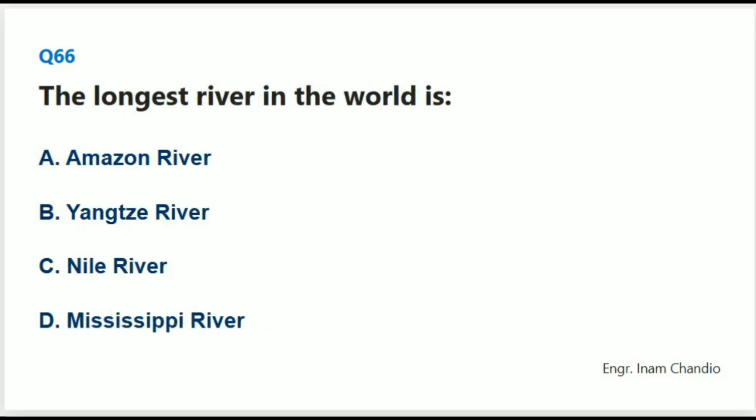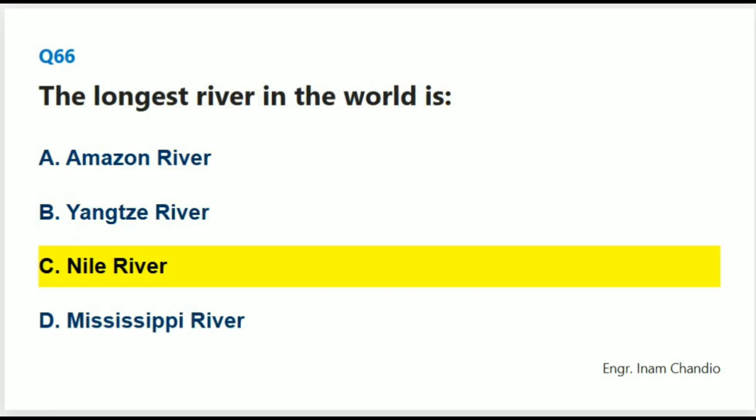The longest river in the world is: The correct answer is C. Nile River.